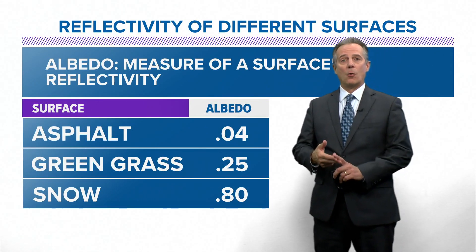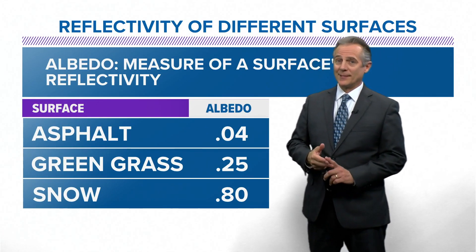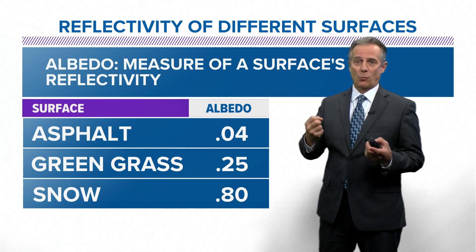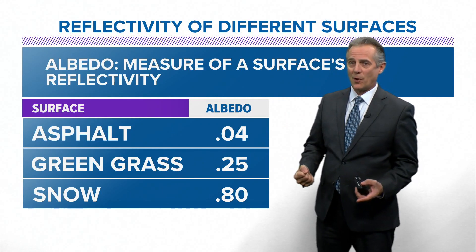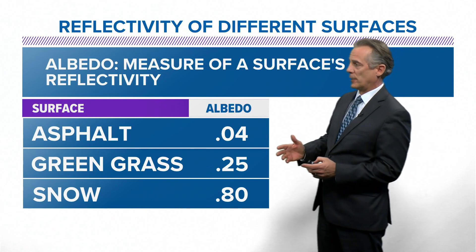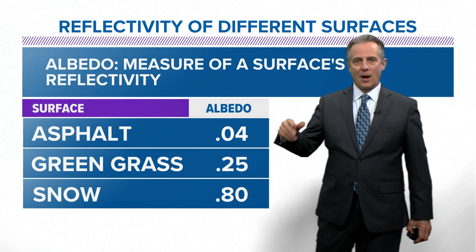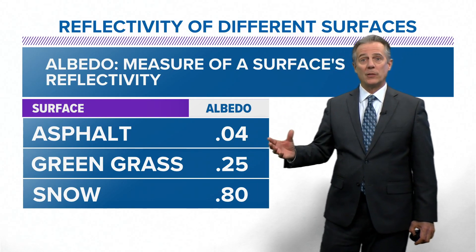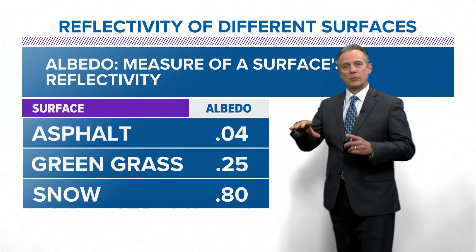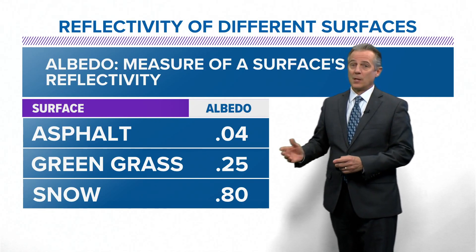Asphalt has a very low albedo, so it basically doesn't reflect very well. It absorbs, and that's why it gets so hot on asphalt in the summertime. Especially, green grass has a 0.25 albedo, which means about 25% of the sun's rays — the energy — reflects off of grass.